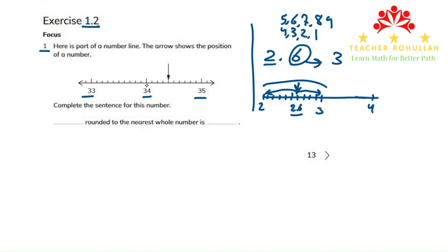So counting from 34: 1, 2, 3, 4. So the number that the arrow points to is 34.4. Now it says, complete the sentence for this number. We found that this is 34.4. We say that 34.4 rounded to the nearest whole number is 34. We say that 34.4 is close to 34 rather than 35.